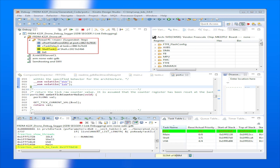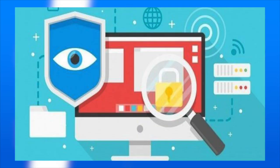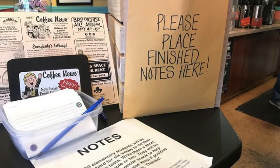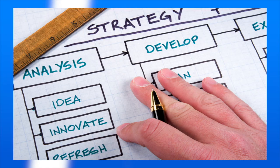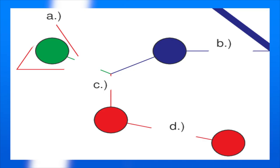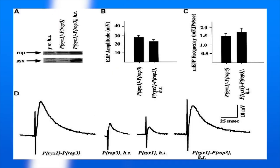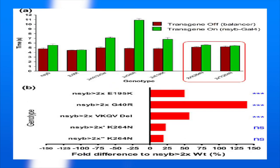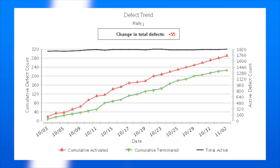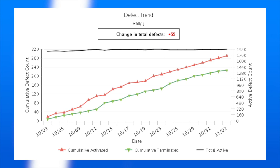Debugging will not give complete confidence that the system meets its requirements, but testing gives confidence. The types of defects that occur during program development include arithmetic defects, logical defects, syntax defects, multi-threading defects, interface defects, and performance defects.